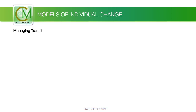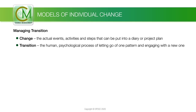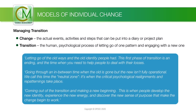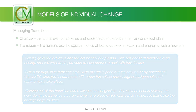The second of our two models of individual change was developed in the early 1990s by William Bridges in his book Managing Transitions. Bridges makes a key distinction between change and transition. It is clear from the discussion of the change curve that transition will be a personal process — people will vary as to how quickly they will be ready to let go of the past and truly engage with a new future. Bridges describes three phases, or processes, that must be completed for personal transition to be successful. He explains that change is the actual events, activities and steps that can be put into a diary or project plan.